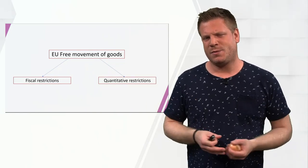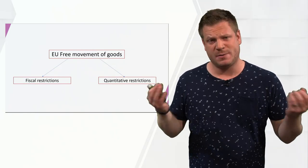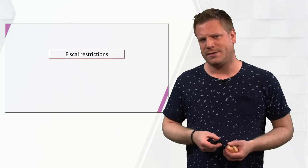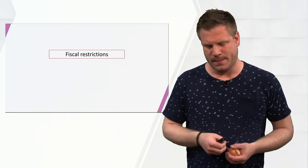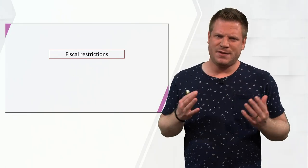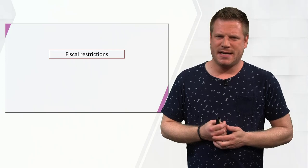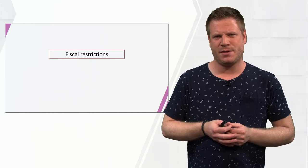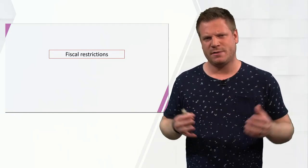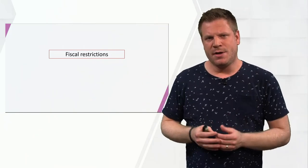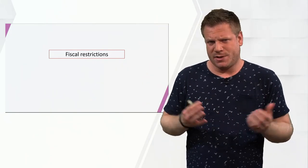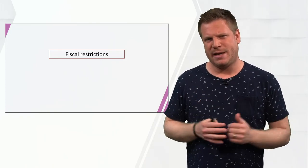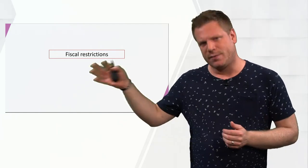However, the way this is done is rather complicated and it requires some further explanation. Let's start with the fiscal restrictions and then afterwards we will talk about the quantitative restrictions. There are two ways a country can use a fiscal restriction to favour its own domestic products over foreign products. We want to establish one common zone where products, regardless of their country of origin, can be sold on equal footing — both in fiscal and non-fiscal terms.